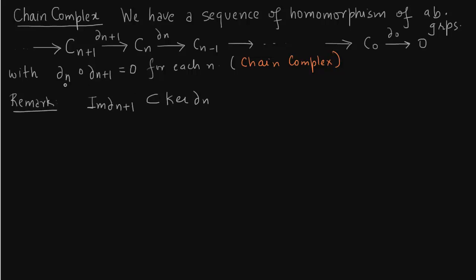And we want to find out by how much this image of delta_n+1 differs from the kernel of delta_n. So to find the difference we define the homology groups. This is the kernel of delta_n over the image of delta_n+1.